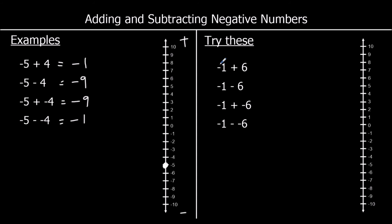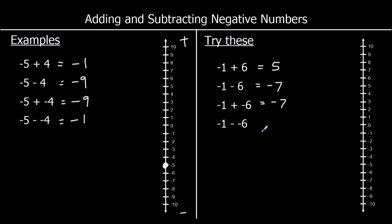Starting at negative 1 and going up 6 spaces gets you to 5. Starting at negative 1 and going down 6 spaces gets you to negative 7. The third one is the same as negative 1 minus 6, which is negative 7. And the last one is the same as negative 1 plus 6, which is 5.